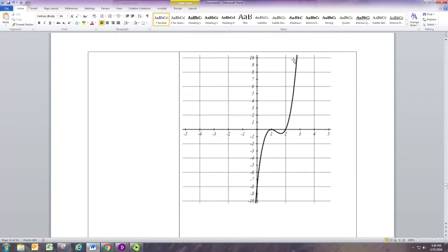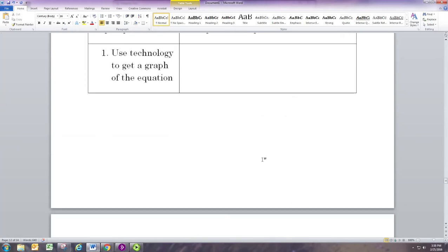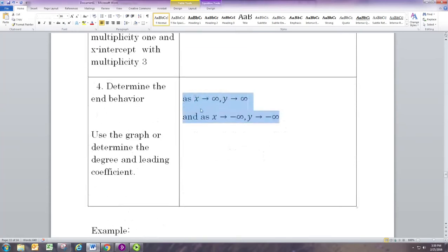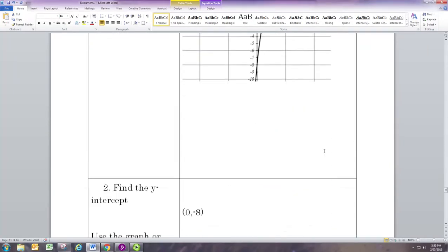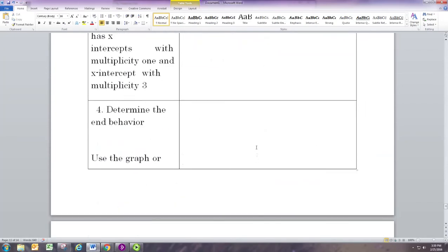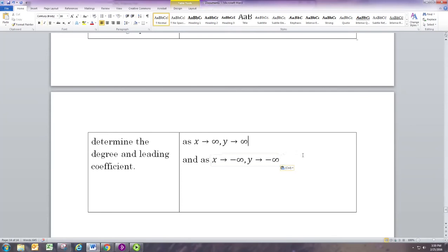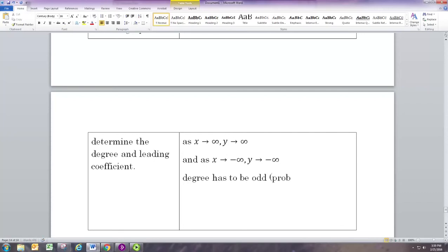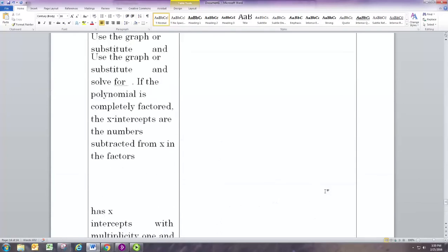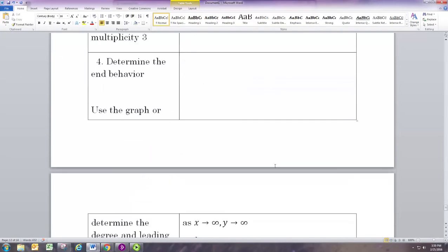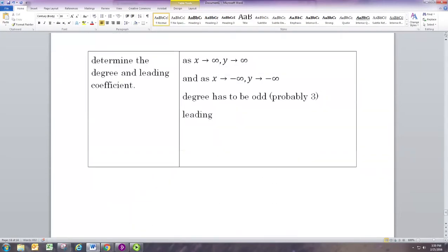The end behavior is pretty obvious - it's the same as the other example where it goes up on the right and down on the left. So we can use the same set of end behavior expressions. Remember we don't have the equation, but we can actually tell from this that the degree, the largest exponent, has to be odd, and it's probably three. If it's a degree three polynomial, then we know that we'd have multiplicities of two and one to add up to three. And the leading coefficient is definitely positive.